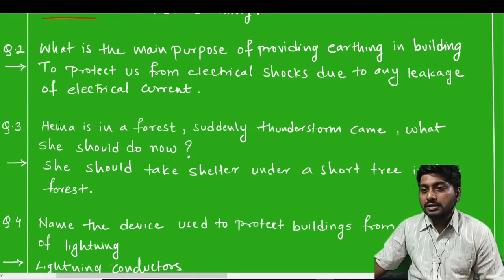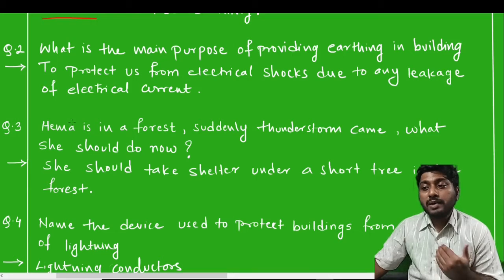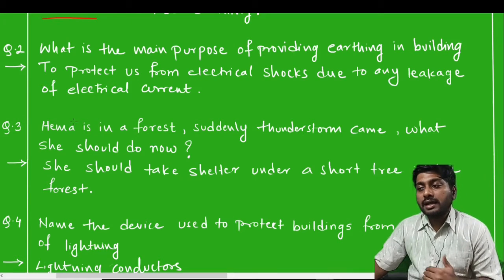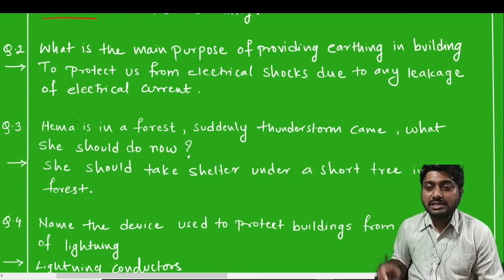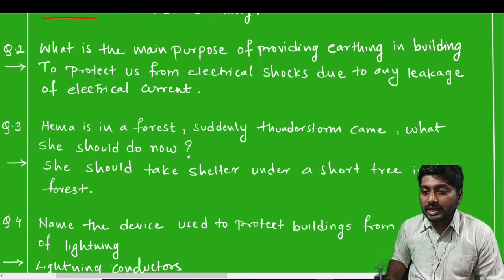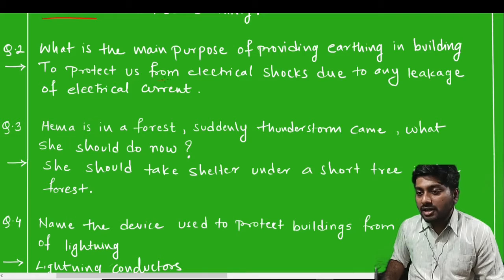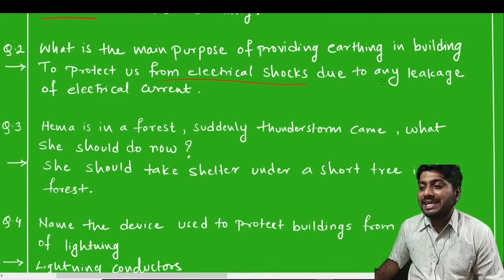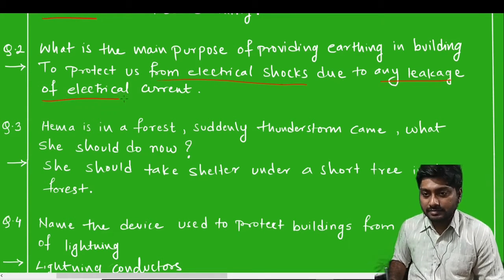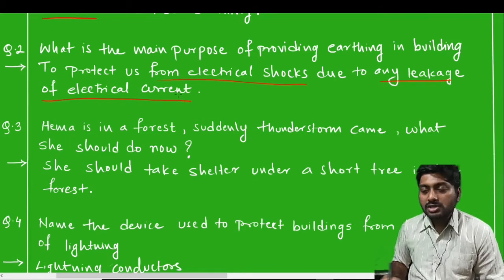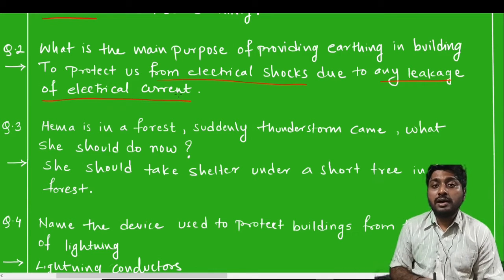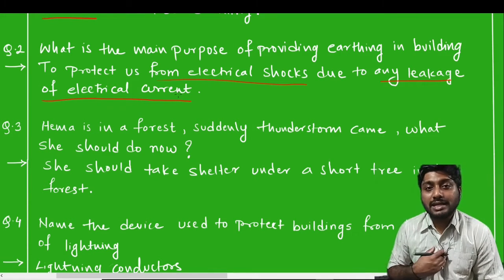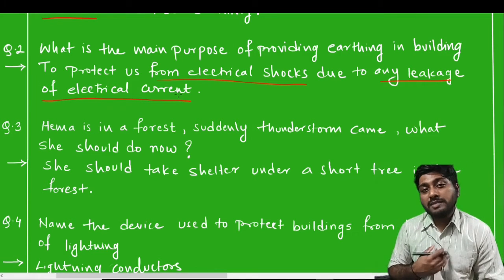Next question: what is the main purpose of providing earthing in the building? The main purpose of earthing is to protect us from electrical shocks due to any leakage of electric current.